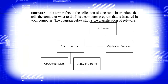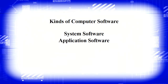Now let's talk about software. This term refers to the collection of electronic instructions that tells the computer what to do. It is a computer program that is installed in your computer. Software is classified into two kinds: system software and application software.